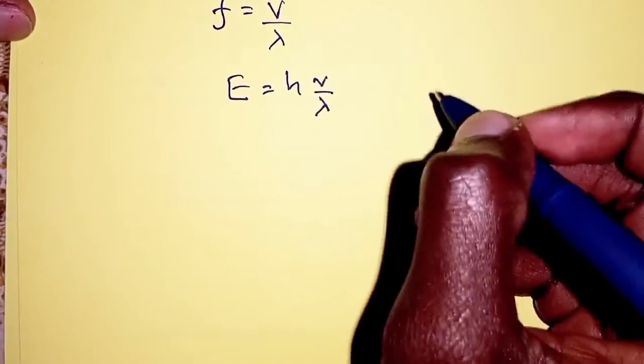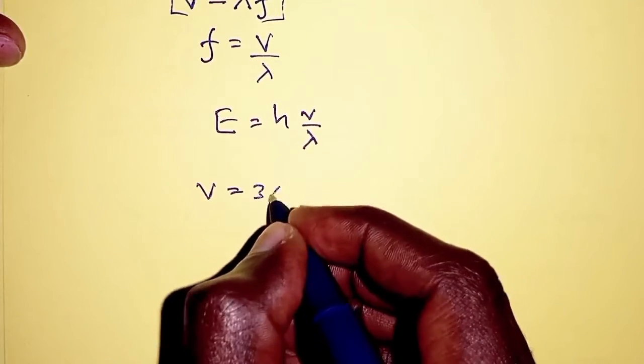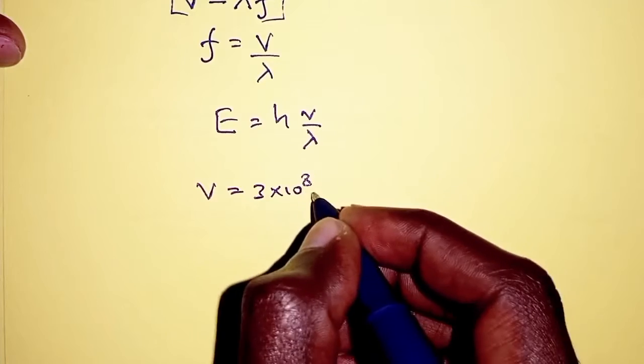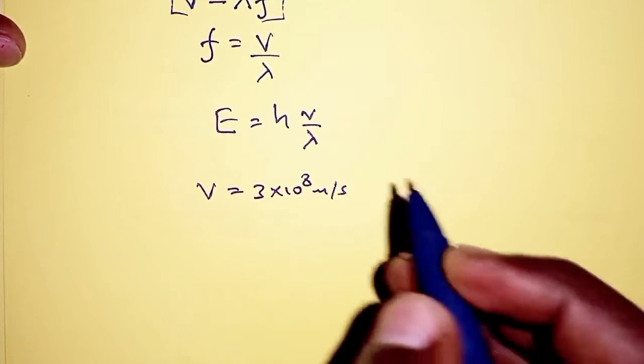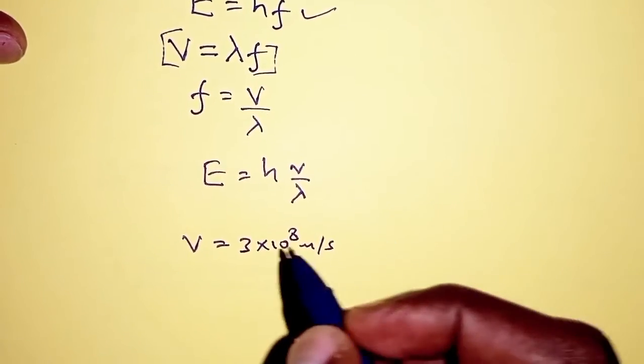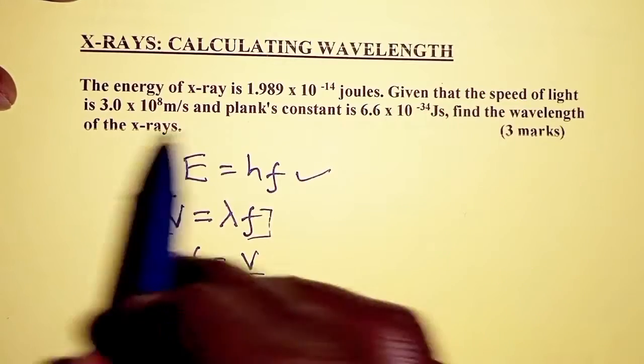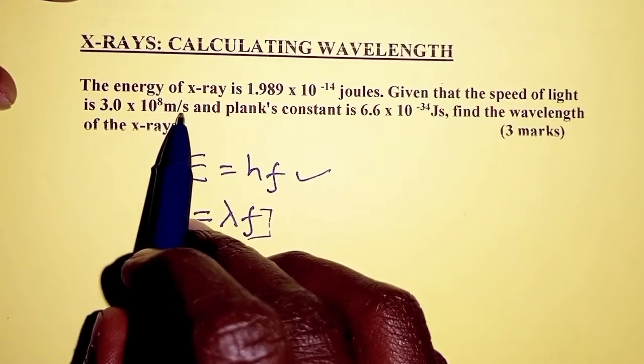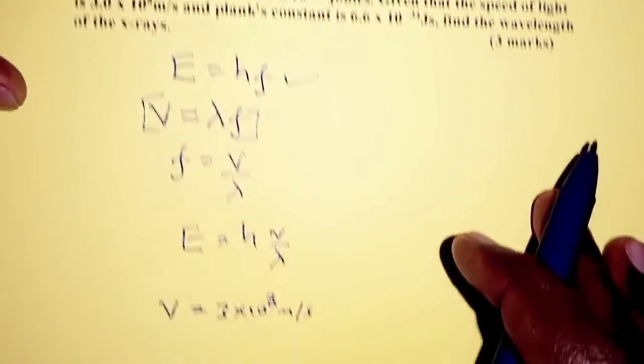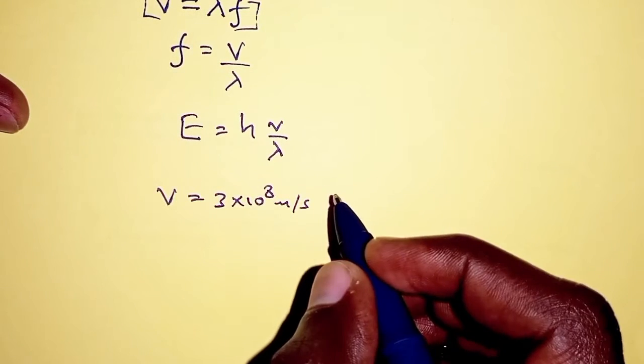Now v is equal to 3 times 10 power 8 meters per second. The velocity of all electromagnetic radiation is equal to the velocity of light. If you recall, the speed of light is 3 times 10 power 8 meters per second. That is the same for x-rays, x-rays being an electromagnetic wave.